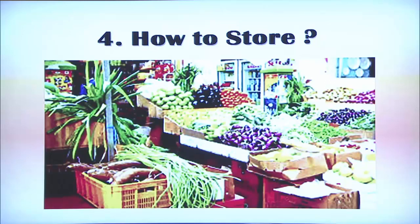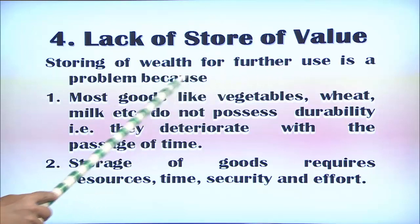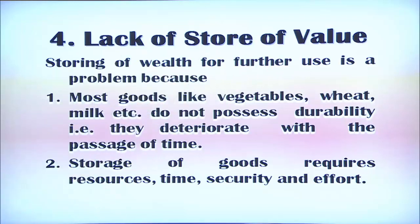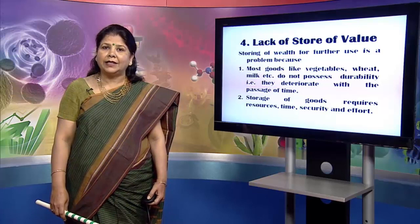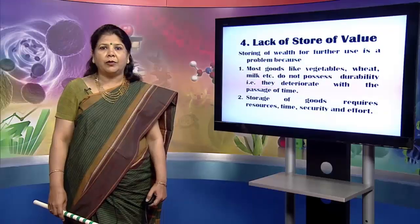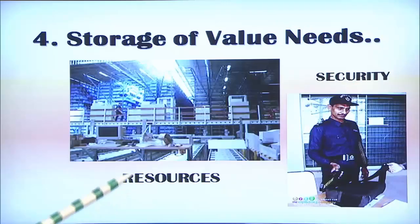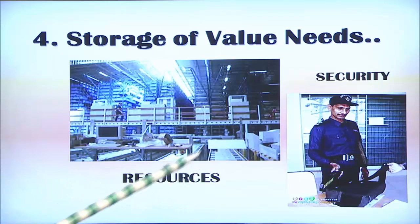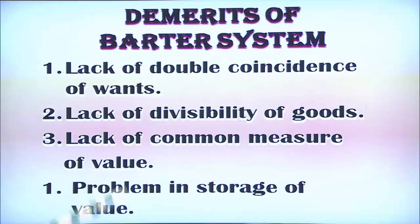The fourth problem was the lack of store of value. Storing wealth in the barter system for further use is a problem because most goods like vegetables, wheat, and milk do not possess durability — they deteriorate with the passage of time. Storage of goods requires resources, time, security, and effort. You can see the image of a godown and a security guard needed to guard goods stored for future use.